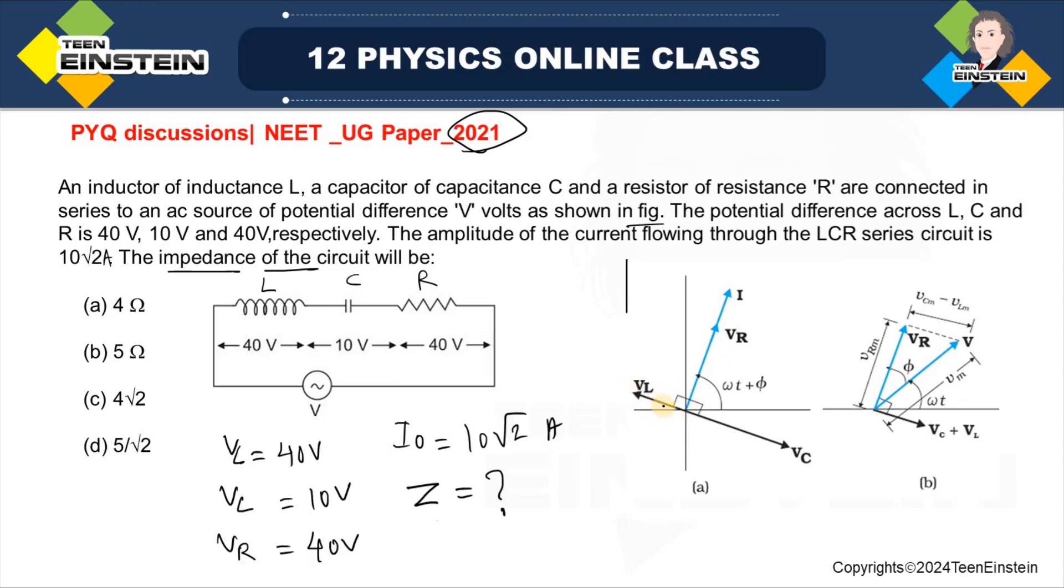Whereas, the voltage drop across the inductor will be 90 degree ahead of the current phasor. And the phasor for the voltage drop across the capacitor will be lagging behind the current phasor by 90 degree. So, you can see from here.